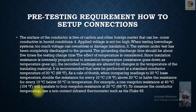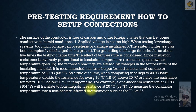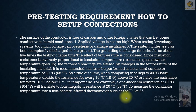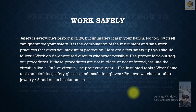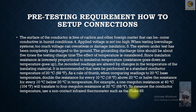As a rule of thumb when comparing readings to a 20-degree base temperature: double the resistance for every 10 degrees below 20°C, or halve the resistance for every 10 degrees above 20°C. For example, a 1 megaohm resistance at 40 degrees Centigrade is equivalent to 4 megaohms at 20 degrees Centigrade. To measure conductor temperature, use a non-contact infrared thermometer such as the Fluke 65.